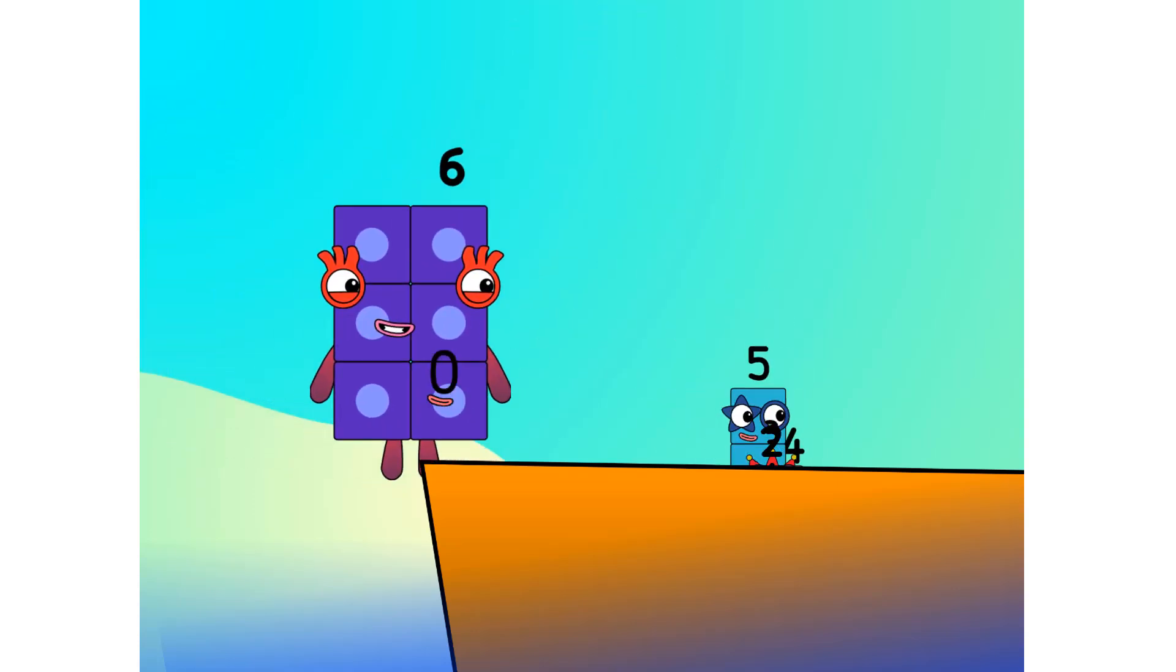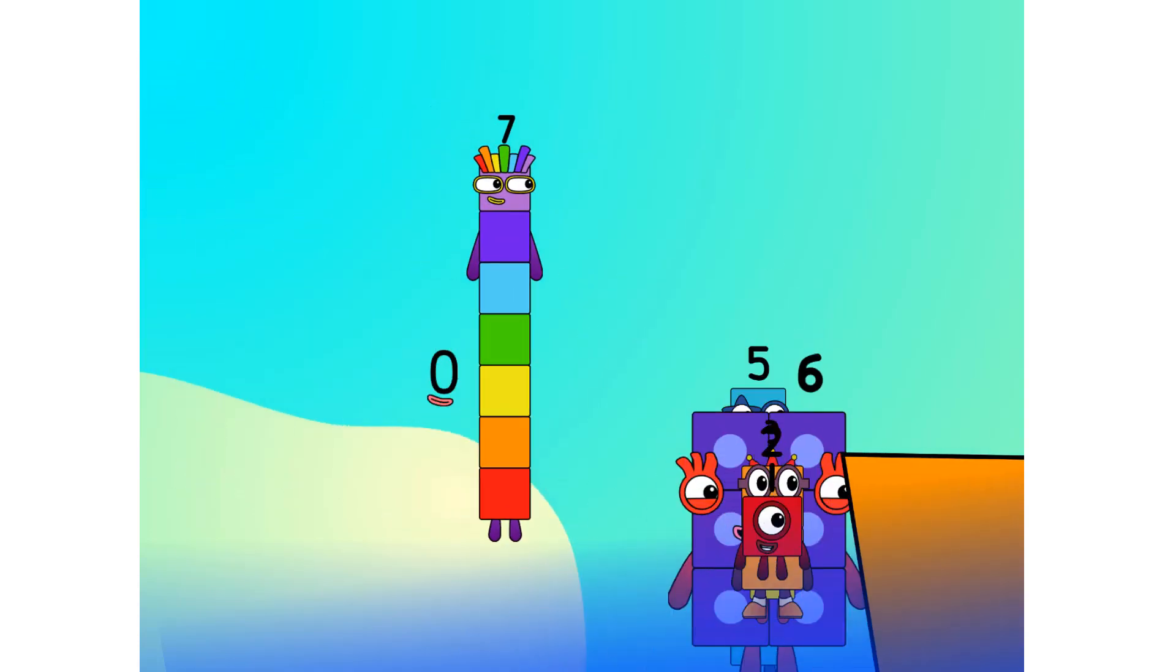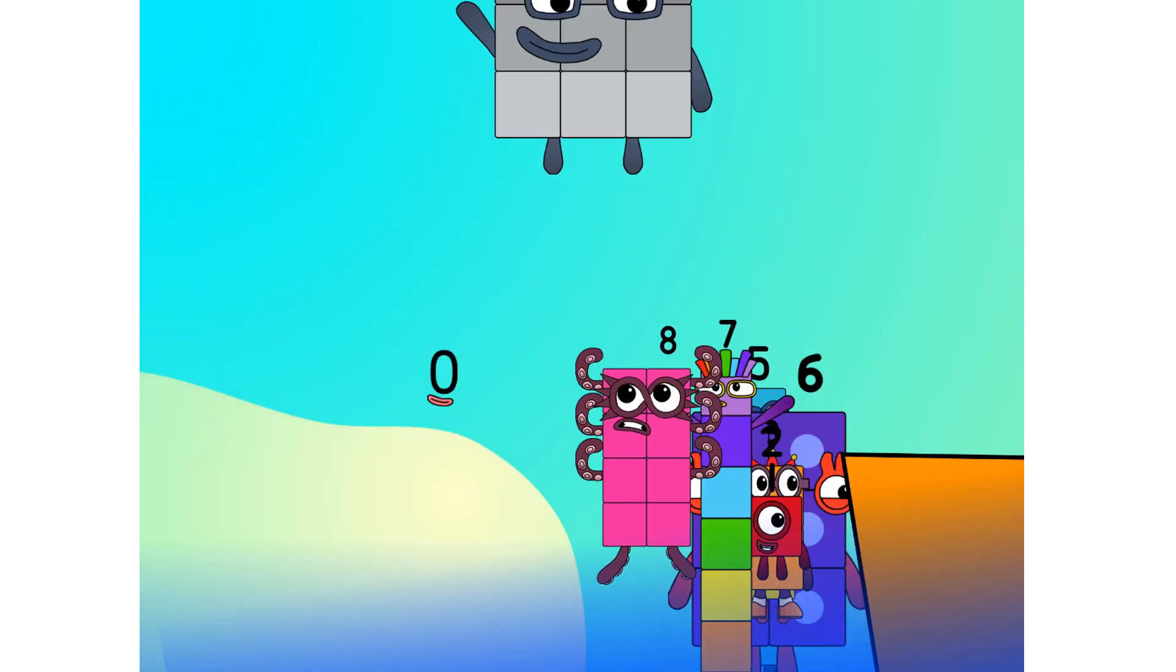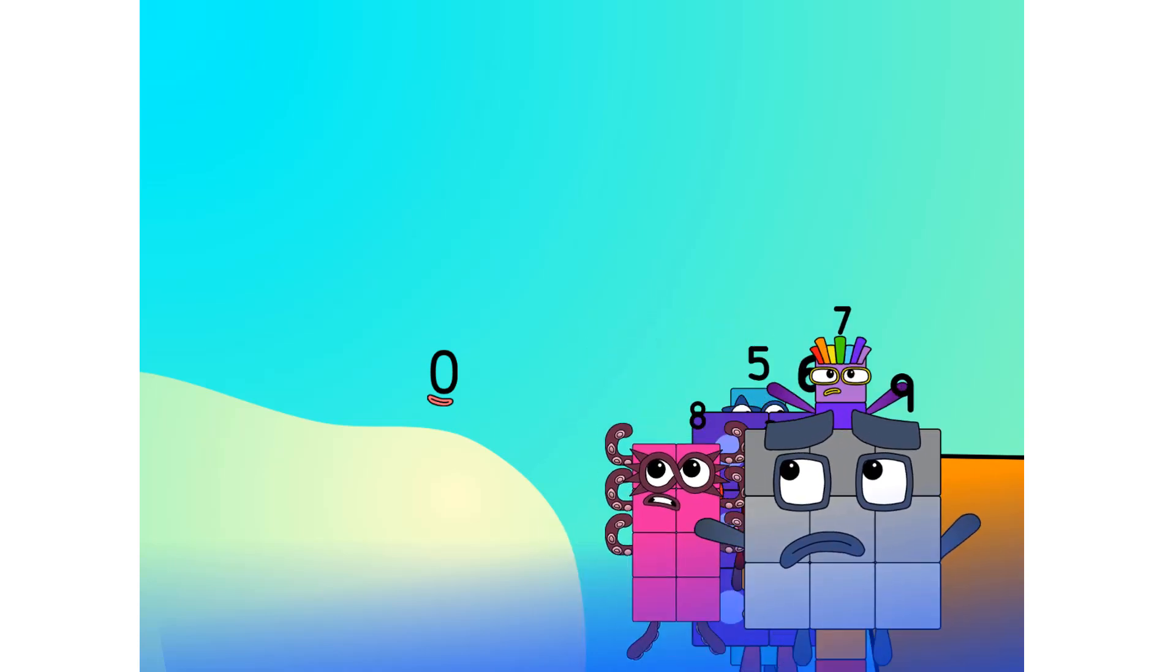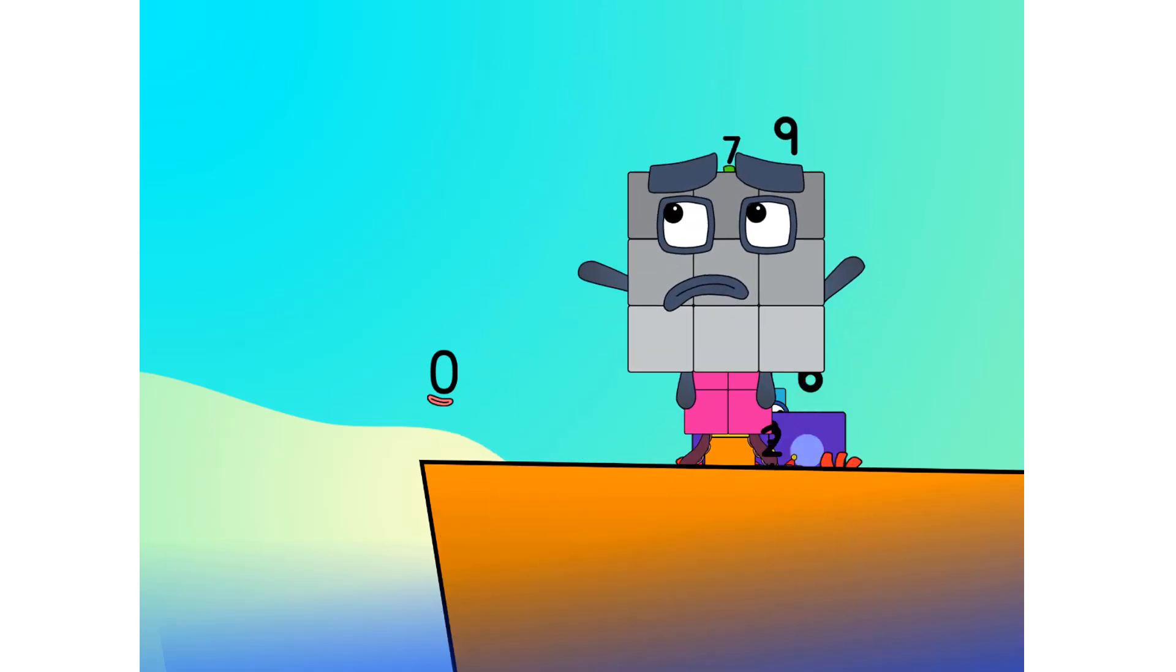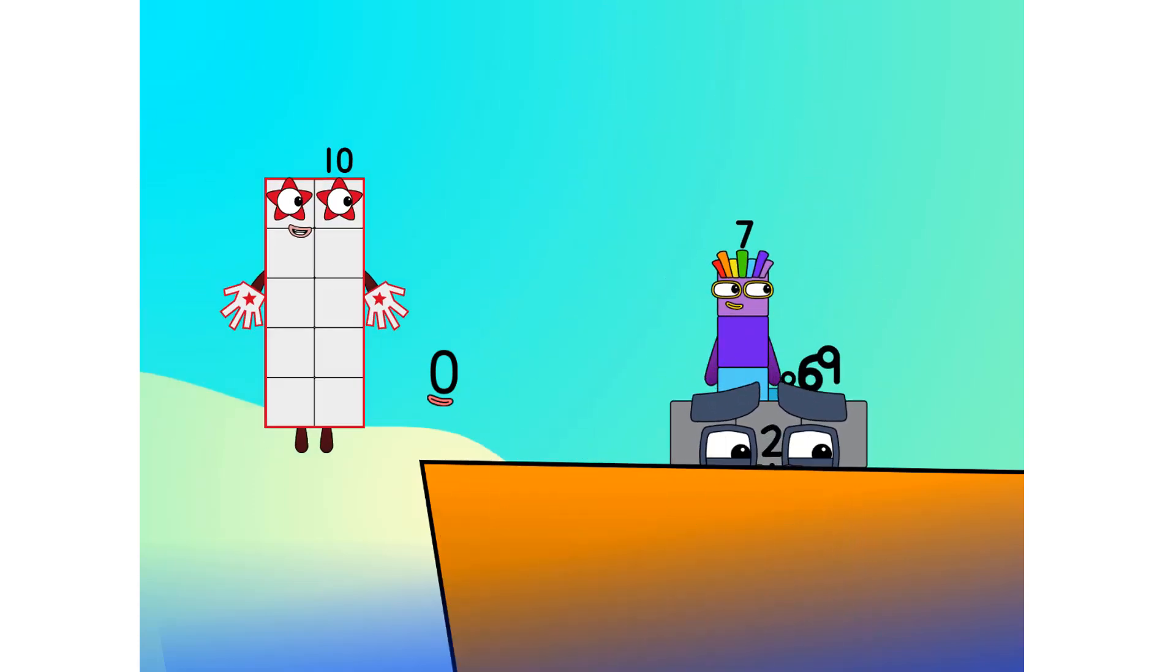Alright me hearties, into the boat you go. I have room for 1000 numbers. Number 1, 2, move along lads, 3, 4, 5, 6, 7, step lively, 8, smartly now, move along 9. Blow me down, numbers overboard! Hang on lads, it's a good thing you know how to swim.